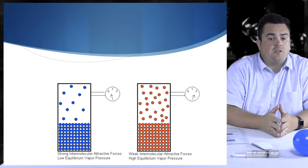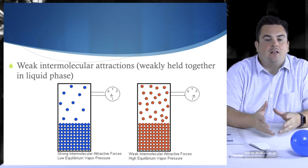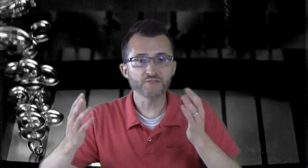Increased vapor pressure can be caused by weak intermolecular attractions, weakly held together in the liquid phase. So if I have weak intermolecular attractions, the particles in the liquid phase are loosely held together. They're not held together very strongly. So it's really easy to evaporate. Look how easy it was to form a vapor and get a high vapor pressure. If I have strong attractions, they're really tightly held together, I don't get as much vapor because it's harder to overcome those attractions. So I don't get as much vapor pressure.